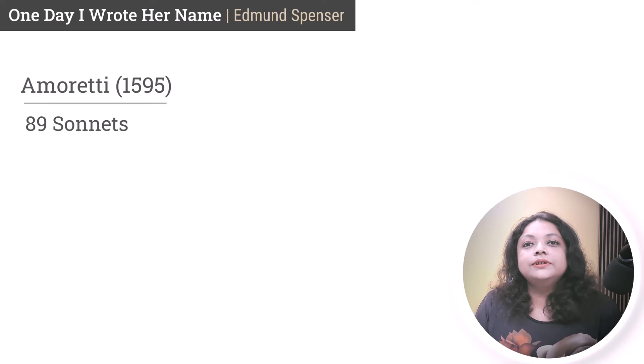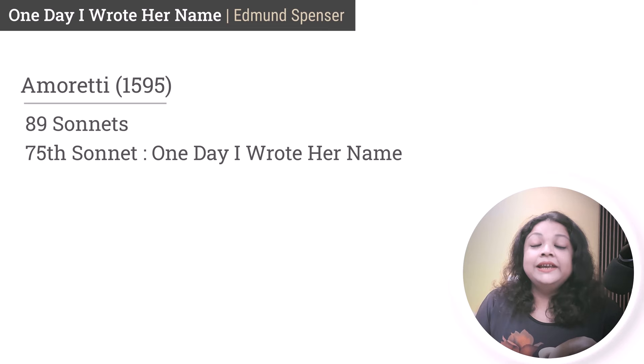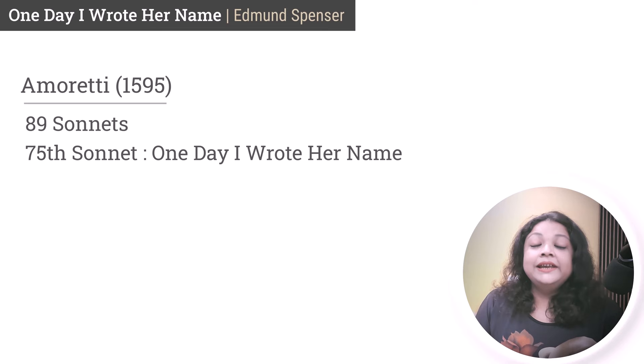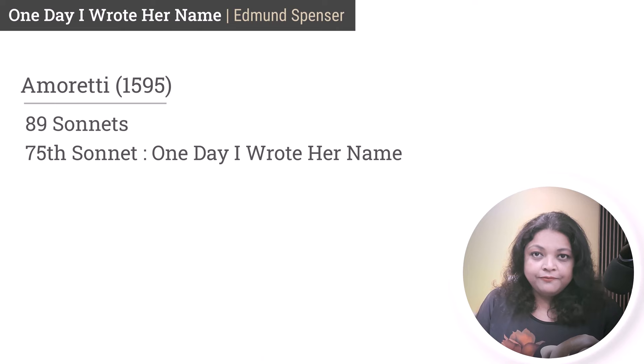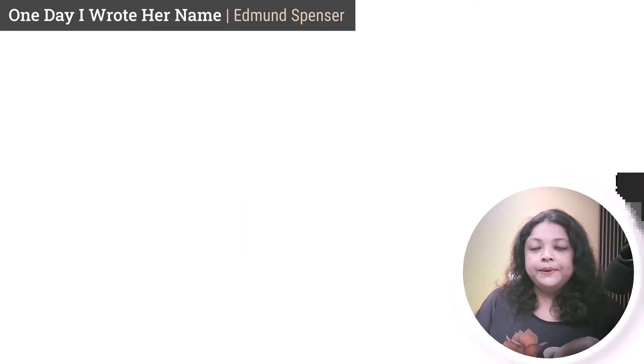The sonnet we are going to look at today is the 75th one. He wrote this cycle during the renaissance, and poets in England were undergoing a series of phases in which they experimented with different kinds of poetic forms and tried to do something very innovative. Before going into discussion on different aspects of the poem, I want you to look at the poem itself. It's a very beautiful, short love poem and I'm sure you're going to like it.